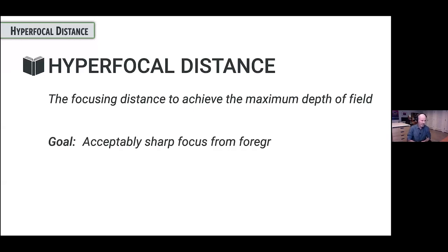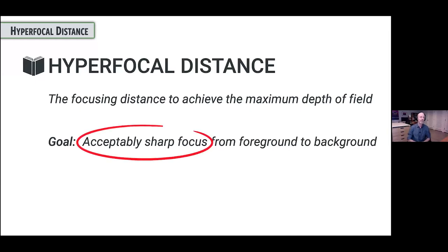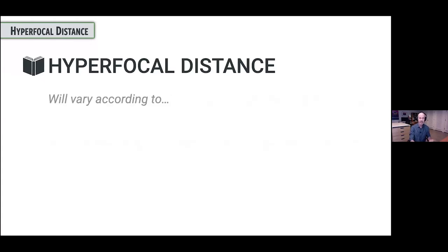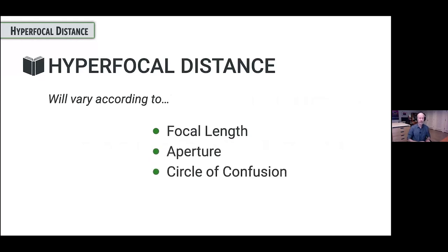The goal here is acceptably sharp focus from the foreground to the background. What do we mean by acceptably sharp focus? This is a term that may vary from person to person. It's going to vary according to all the other factors that depth of field is affected by: the focal length of the lens, the aperture you're shooting at, as well as the circle of confusion. And you may feel like you are in the circle of confusion right now, but it is a way of measuring sharpness.